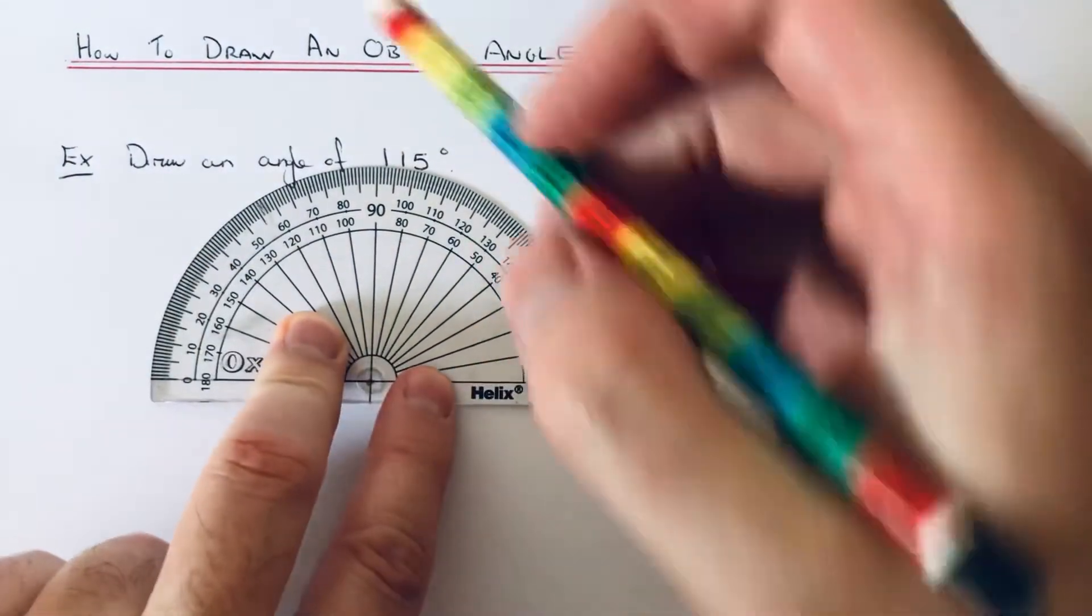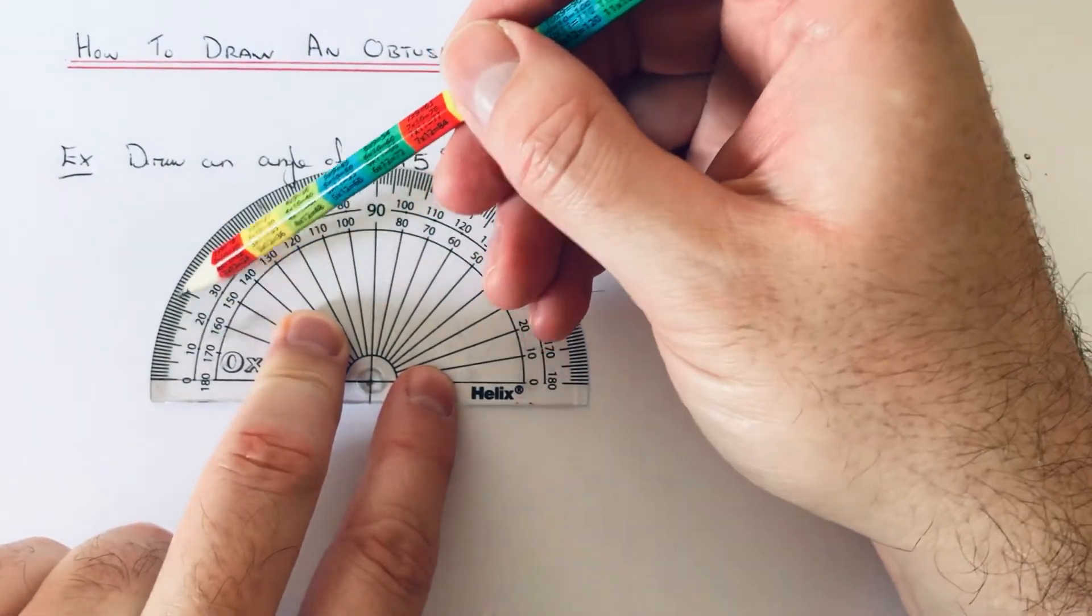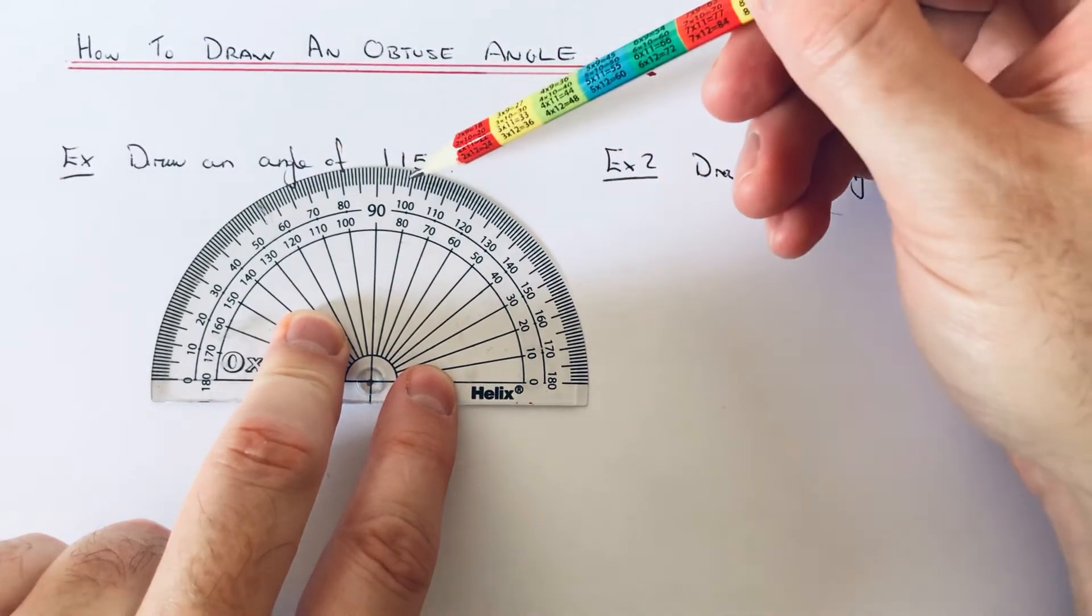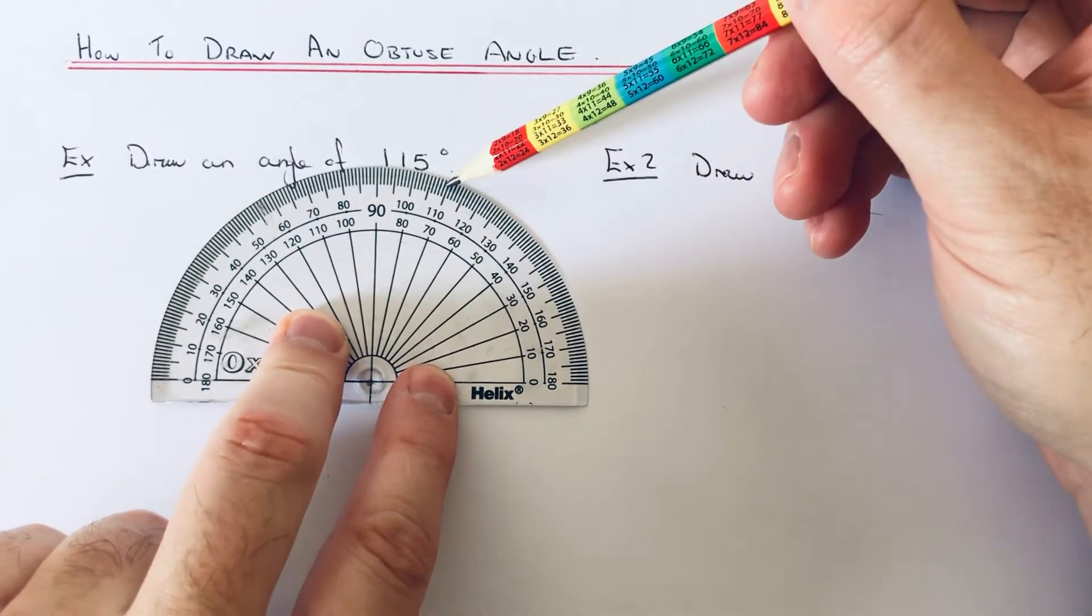So 0, 10, 20, 30, 40, 50, 60, 70, 80, 90, 100, 110. So if we stop here and then we just need to count an extra five degrees on.